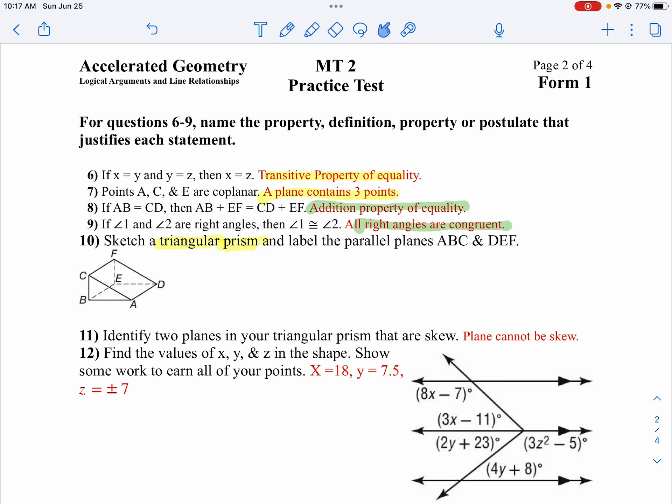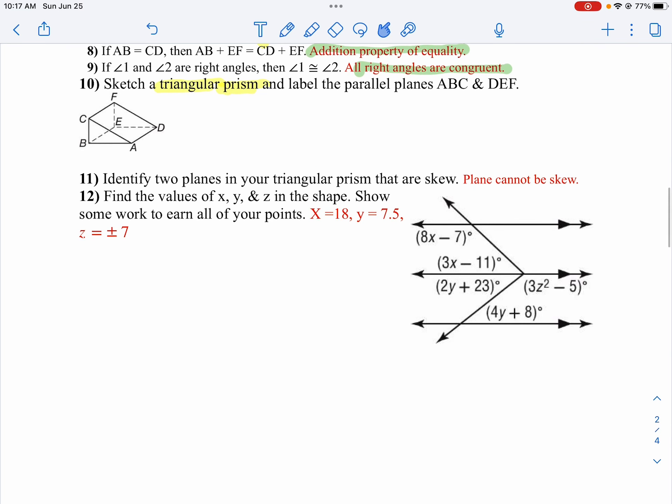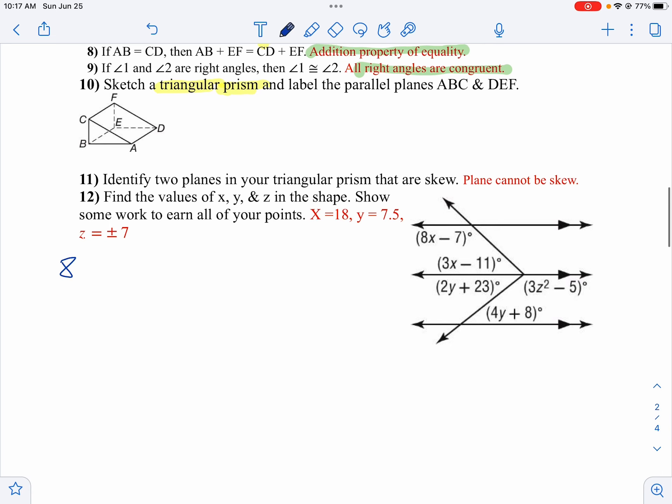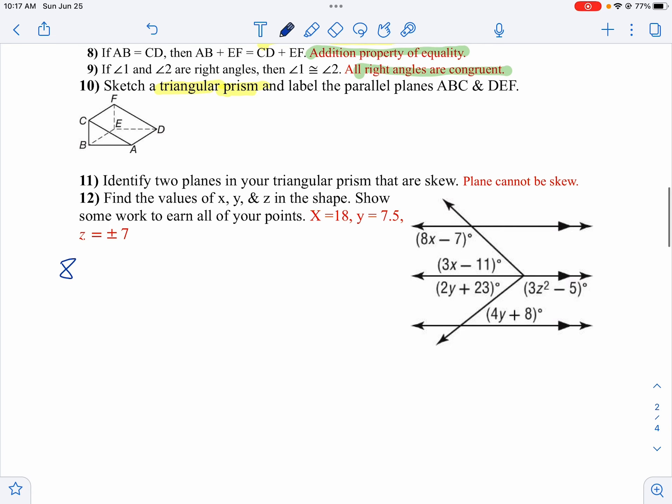On number 12, we want to find x, y, and z in this shape. I want to show some work. Notice I'm given parallel lines. Since I'm given parallel lines, I look at my x's. They're same side interior angles. So then we're going to say 8x minus 7 plus 3x minus 11 equals 180.